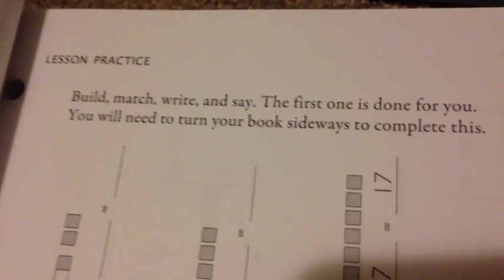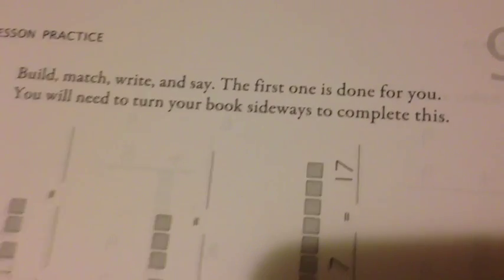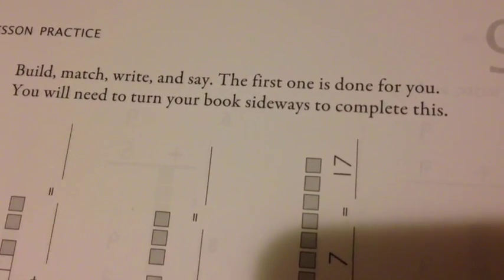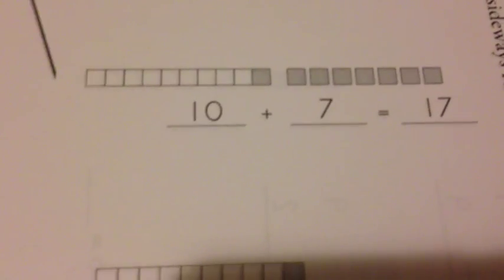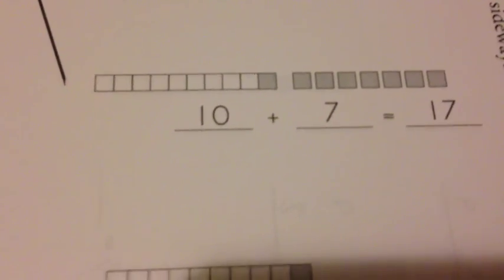It says: build, match, write, and say. The first one is done for you. You will need to turn your book sideways to complete this. For number 1, you have 9 plus 8. Because you've already gone through the other lessons with teaching about grouping, they know that we're going to make this 10, then plus 7, which is going to give an answer of 17. In the complete lesson, they're going to have a couple of other math equations that they're going to have to match up and put together by counting. We also have number blocks here.